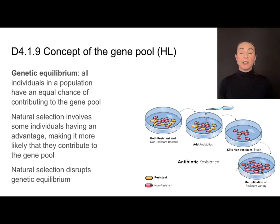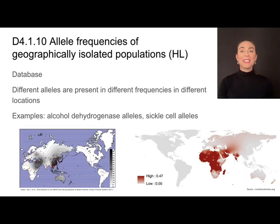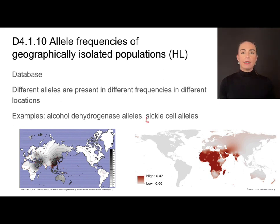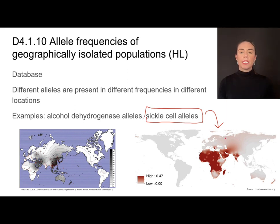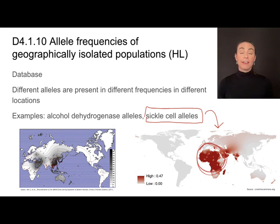You can see how the gene pool has been disrupted by natural selection, and you can see this very clearly in examples using databases showing certain alleles. Looking at two alleles in humans in relatively geographically isolated populations: a map of sickle cell alleles shows a high concentration in certain geographic areas, due to natural selection pressures giving individuals with that allele some kind of advantage.